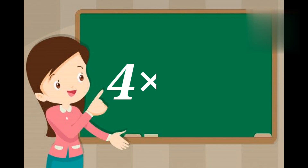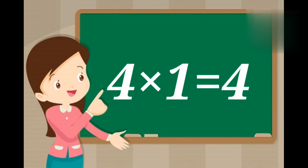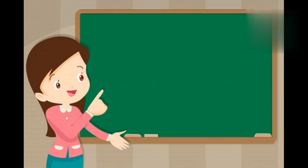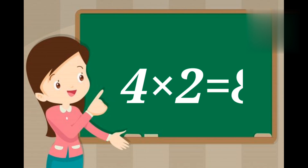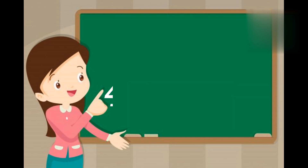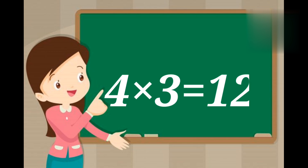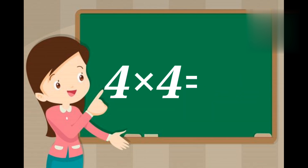Four ones are four. Four twos are eight. Four threes are twelve. Four fours are sixteen.